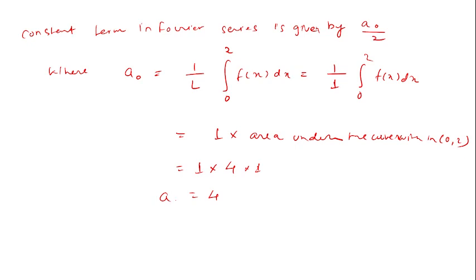So a_0 is coming as 4. Thus your constant term a_0/2 will be 4/2, which is nothing but 2. That is your answer to this question here.